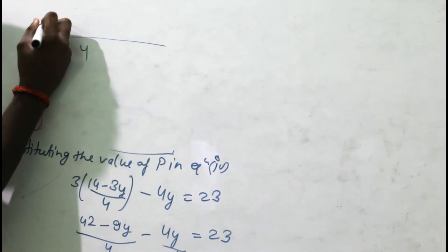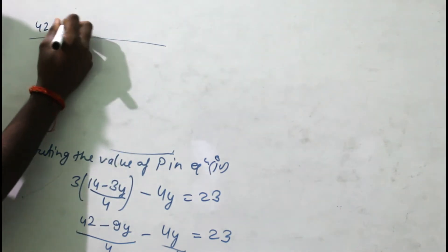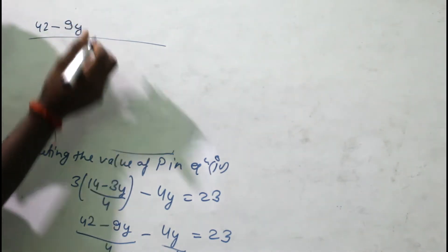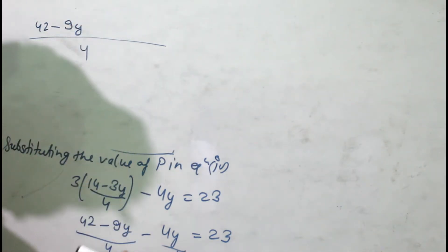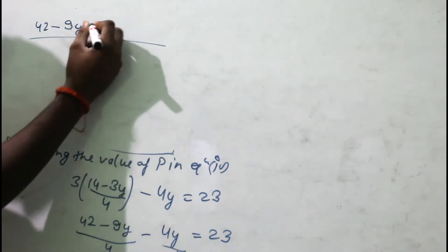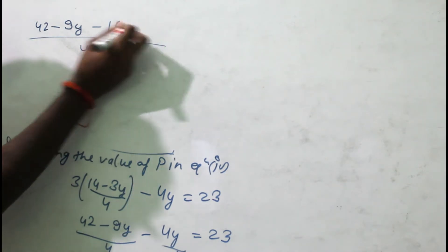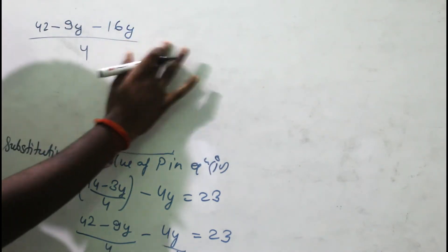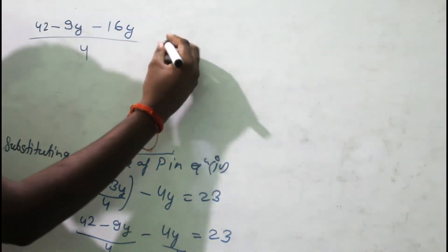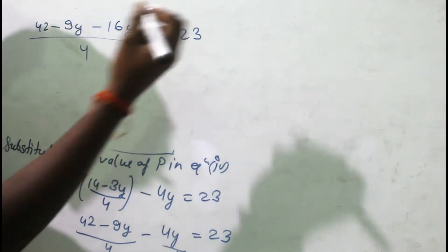Taking LCM as 4: (42 - 9y - 16y) / 4 = 23, so 42 - 25y = 92. Therefore, -25y = 92 - 42 = 50, which gives 25y = -50.